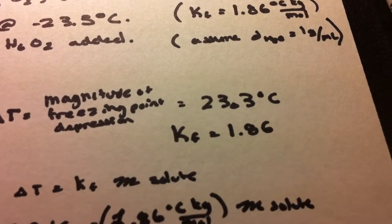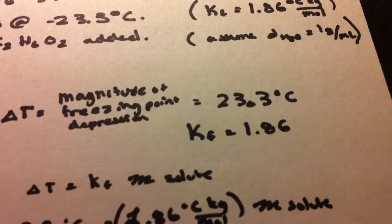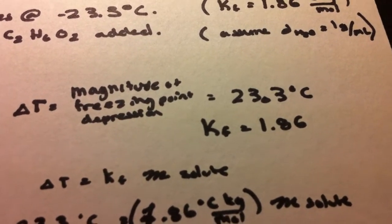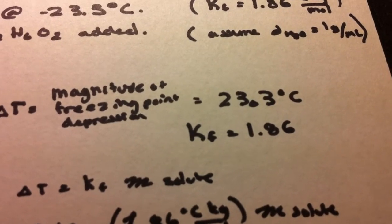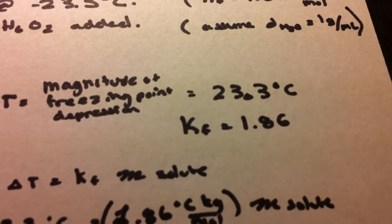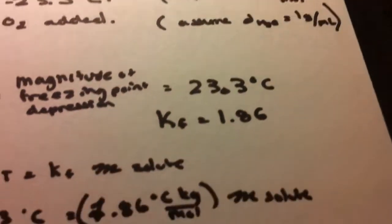let's say we go from 0 degrees Celsius to negative 23.3 degrees Celsius, the magnitude is just going to be 23.3 degrees Celsius. Because that's positive, KF is also going to be positive as we were given.